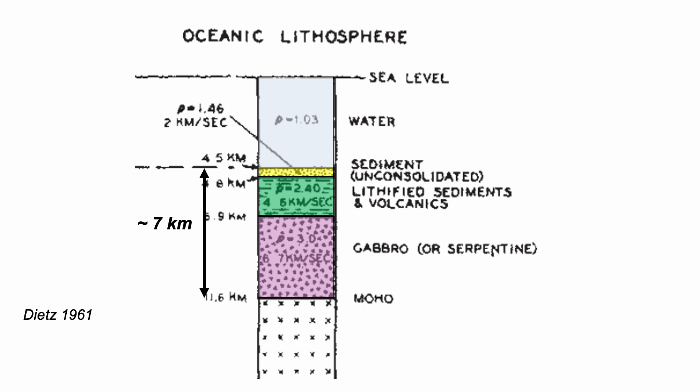So it was igneous rocks erupted on the seabed and intruded from below that record the magnetic reversals. But this image doesn't explain the structure of the crust in any detail, so the forming processes at this stage remained unknown.